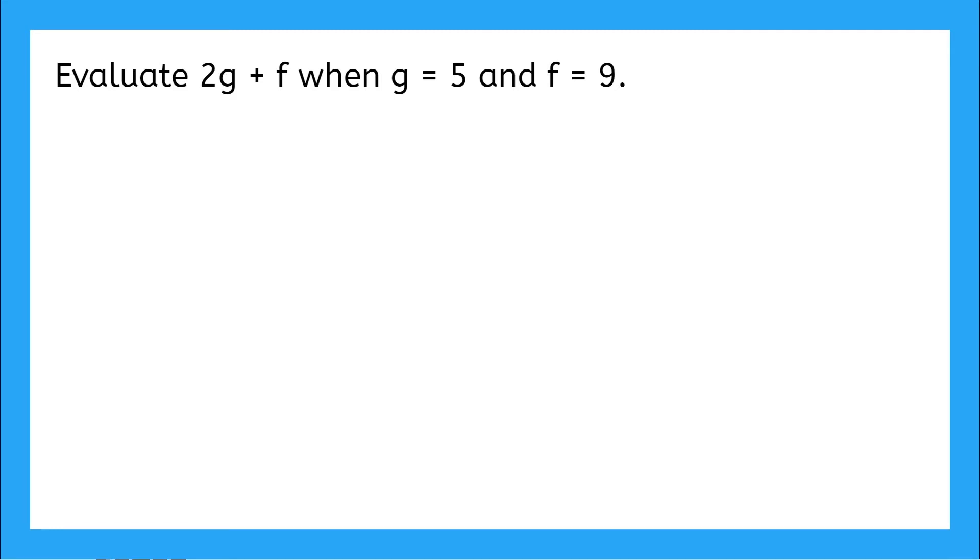First of all, what do you see in the first term? Yeah, this is our first term here. So we have 2 and g, so a product. And what's g? Yeah, g is a variable and that means 2 is a coefficient. Good.